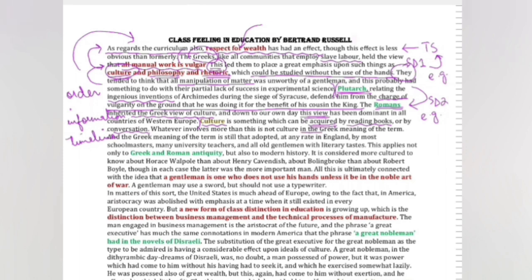So this is very important that the writer is mentioning this thing because as we understand culture today, it has a different connotation. And the Greek meaning of the term is still that adopted, at any rate in England, by most school masters, many university teachers and all old gentlemen with literary taste. Yeh baat usne relate karne ke liye likhi hai ki aaj bhi yeh joh idea hai culture ka, yeh kai joh school masters hain, university teachers hain, aur joh old gentleman hain, they hold the same opinion. This applies not only to Greek and Roman antiquity, but also to modern history.